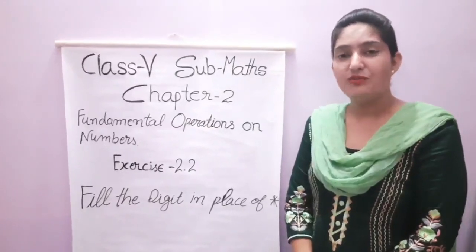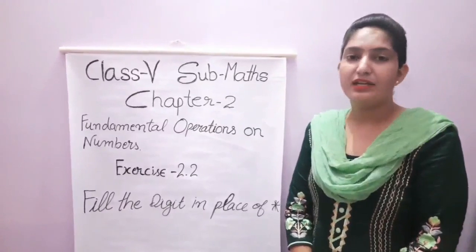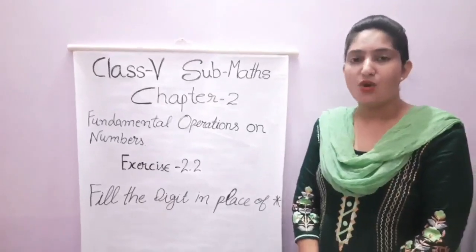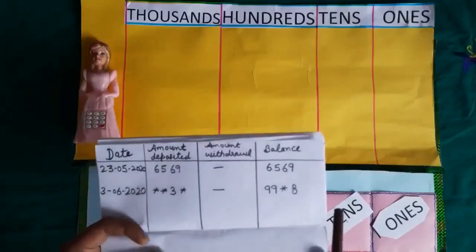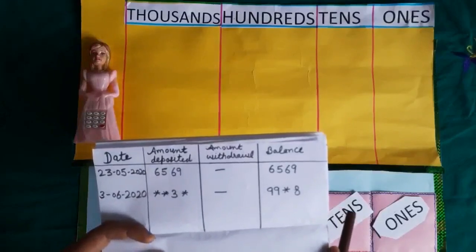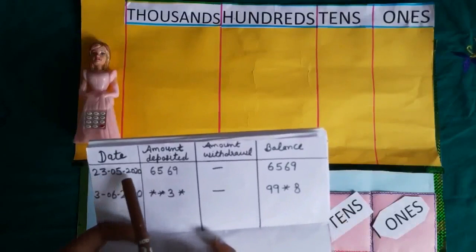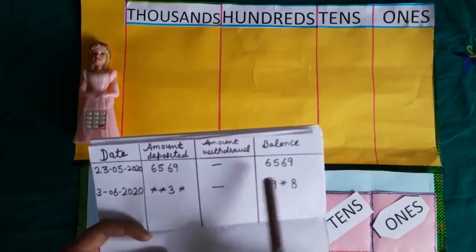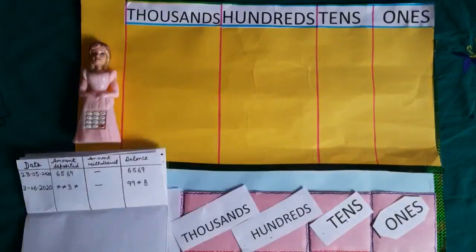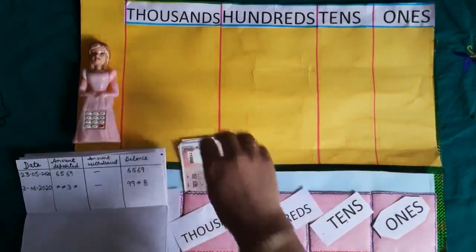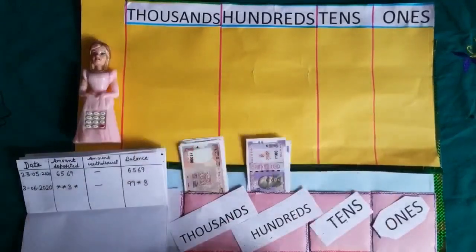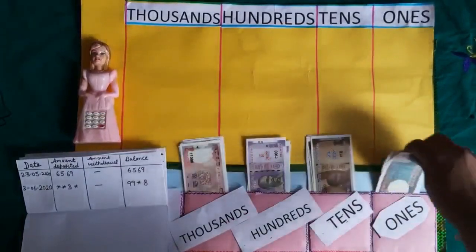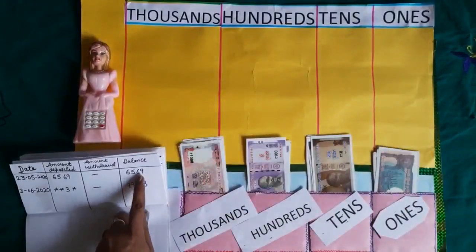Good morning students. Today we will do Chapter 2, Fundamental Operations on Numbers, Exercise 2.2: fill the digit in the place of star. Dear students, let me see Samri's account book on May 23rd, 2020. There are 6569 rupees in her account.